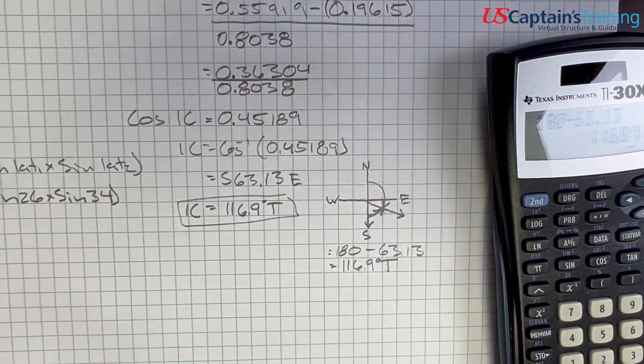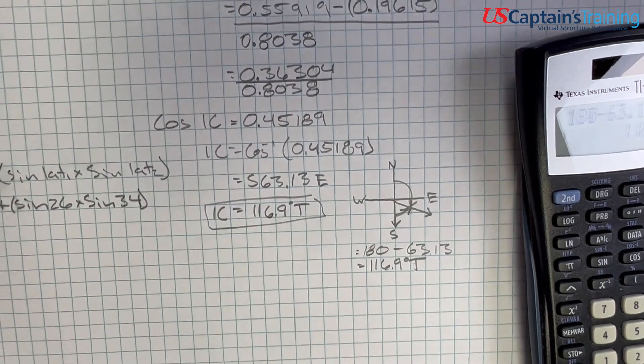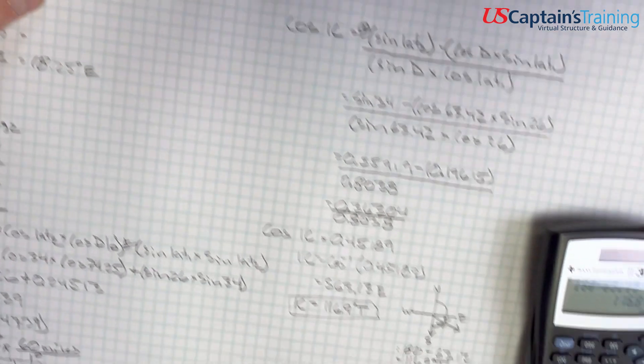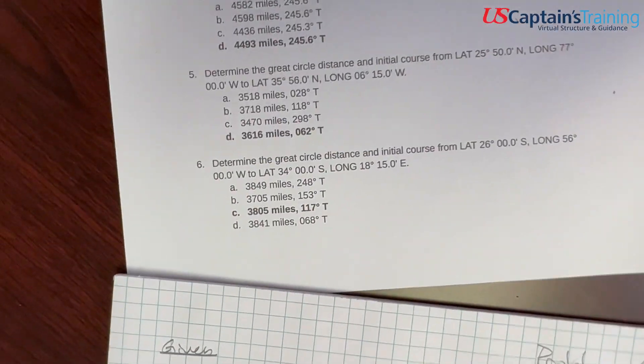Our distance was 3805 miles. Let's look - problem 6: 3805, nailed that one. 117, good, we nailed that one too. That is a solution to great circle distance and initial course practice problem 6.